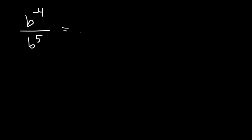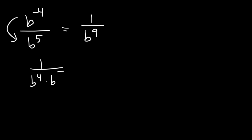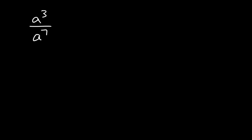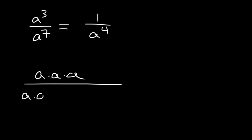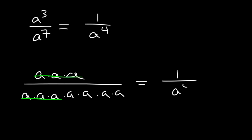Let's understand the b part: b to the 4th over b to the 5th. Why is that 1 over b to the 9th? Another way you can see this is to move the b to the bottom — it will be b to the positive 4th, and 4 plus 5 is 9. For the other example, a cubed over a to the 7th is 1 over a to the 4th. You can see it this way: a cubed is 3 a's multiplied together, and a to the 7th is 7 a's. You can cancel 3 of them, leaving 4 behind on the bottom. So you get 1 over a to the 4th.